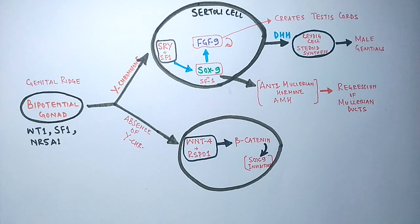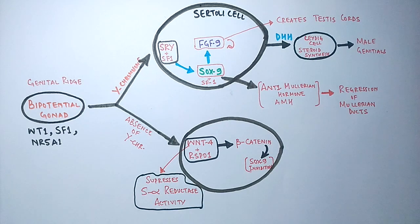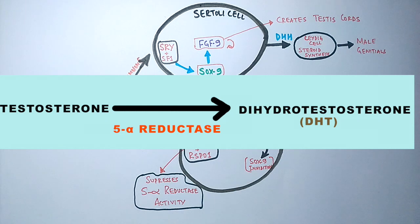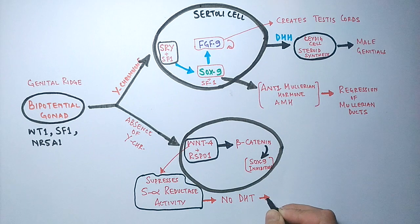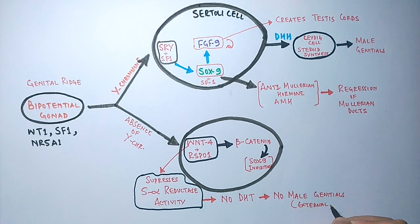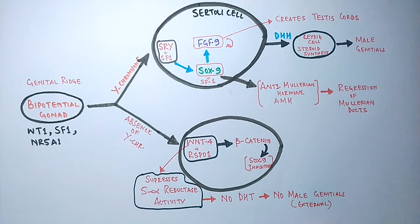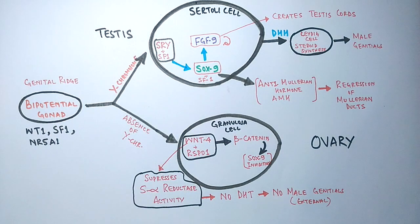Additionally, WNT4 suppresses the activity of 5-alpha reductase, the enzyme that catalyzes the formation of DHT from testosterone. With 5-alpha reductase suppressed, there is no DHT produced, and since DHT is essential for maturation of male genitalia, there are no male genitalia in the female. In this way, the bipotential gonad turns into cortical cords in the XX condition.